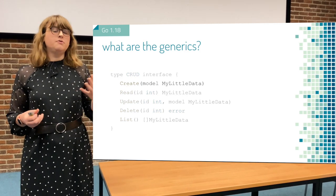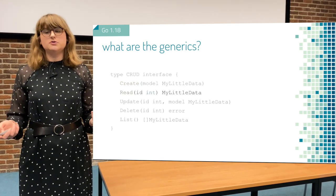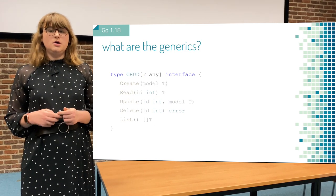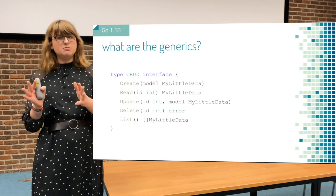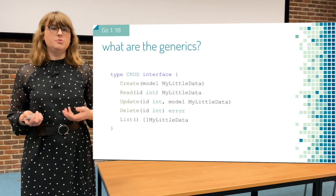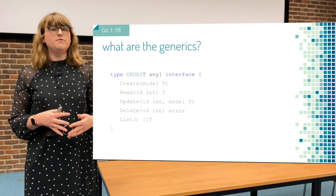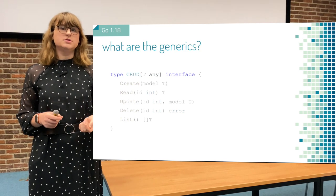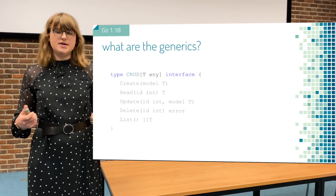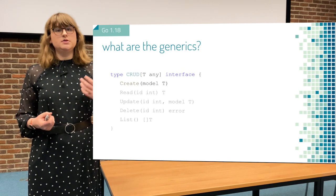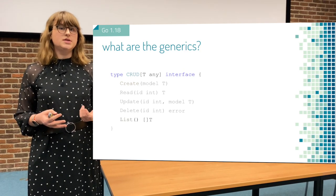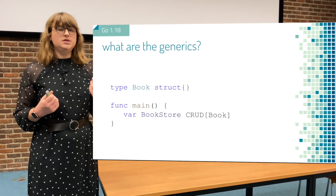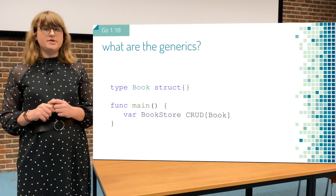You have a create for a specific data model, a read from an ID to a data model, and a delete, a list, and an update — all the usual things you have in your application. But this only works for the specific model which is targeted here. With generics, we can now make this work for any possible data type. By just using square brackets, we can now define parameters for data types. I define type T here, which can be anything — so I can read anything, create anything, and I can also use these types in combinations with, for example, making it a slice of that type. This allows us to have a generic interface for all our CRUD actions in our database.